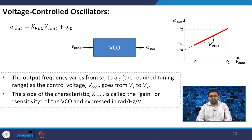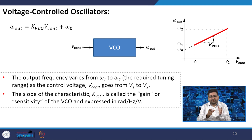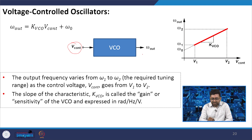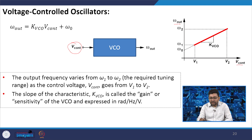Now we are moving towards the voltage controlled oscillator, because we need to tune our oscillator frequency over different ranges — a requirement for transceiver design. The input is V_control, and the output frequency is omega_out. If we plot output frequency versus V_control, at voltage V1 we get frequency omega_1, and as we increase to voltage V2, we get frequency omega_2.